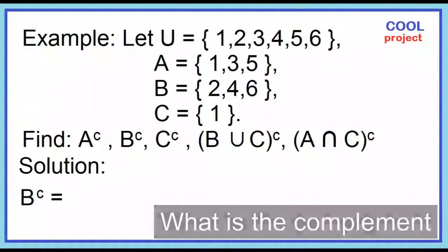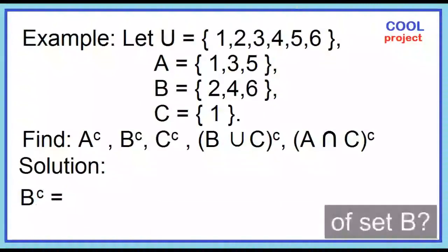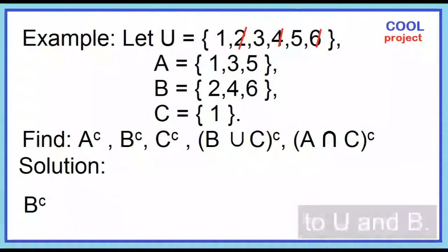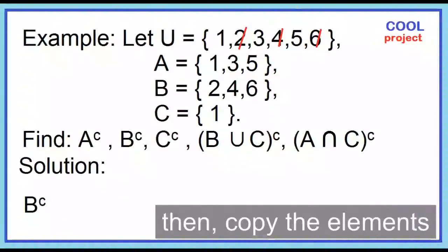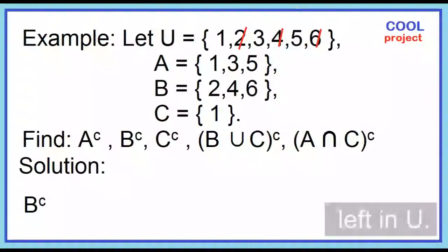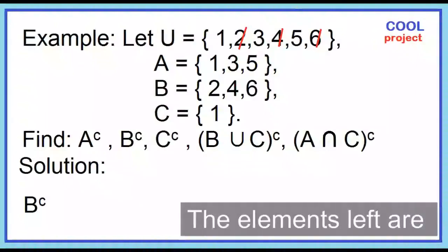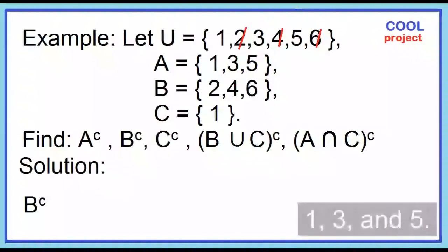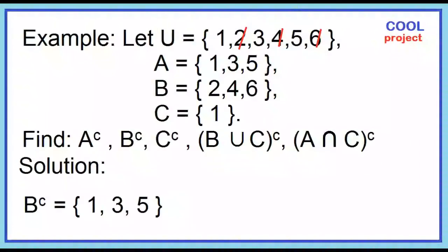What is the complement of set B? Remove the elements common to U and B, then copy the elements left in U. The elements left are 1, 3, and 5. The complement of B contains 1, 3, and 5.